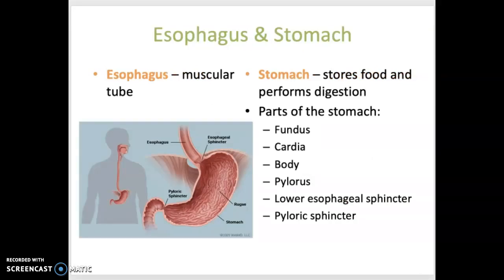From the mouth, food enters the pharynx, which is the upper throat. This is not only a passageway for air but it's also a passageway for food until it reaches the esophagus. The epiglottis is part of the larynx and it's a piece of cartilage that covers the trachea during swallowing to ensure that the bolus moves into the esophagus, which is a muscular tube that carries food into the stomach.